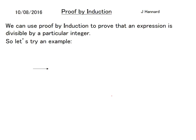A bit of an animation glitch there. We can use proof by induction to prove that an expression is divisible by a particular integer. So let's try an example. Prove, by induction that 3^(2n) + 11 is divisible by 4 for n is a member of the positive real integers.